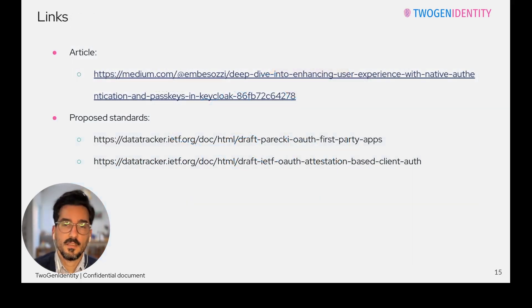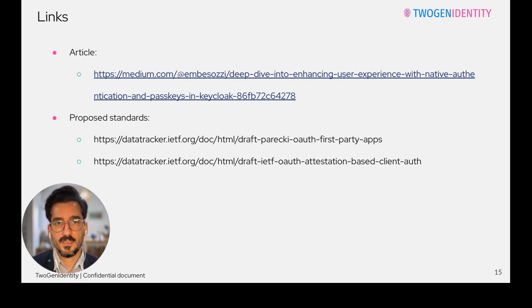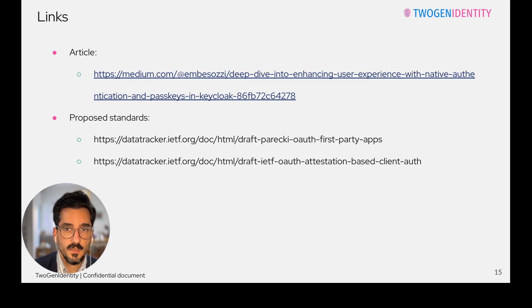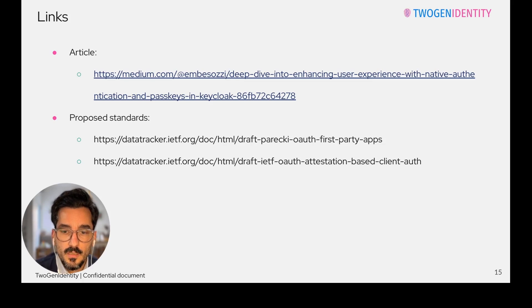Here is the last slide. The first link is the article I wrote about OAuth2 for First-Party Applications — this native integration between the application and IDP with passkeys. You can go there if you want to know more about it. Below are links to this draft, OAuth2 for First-Party Applications, and the other one about OAuth2 app attestation. I think we covered all the points. Thank you all for listening. If you want to discuss it further, you can find me on LinkedIn or through my social accounts. Thank you all. See you. Bye.